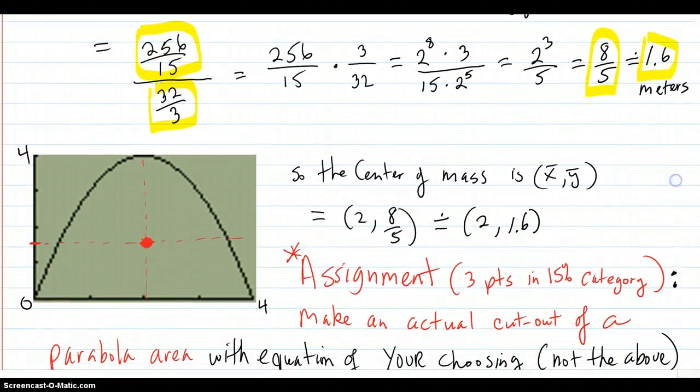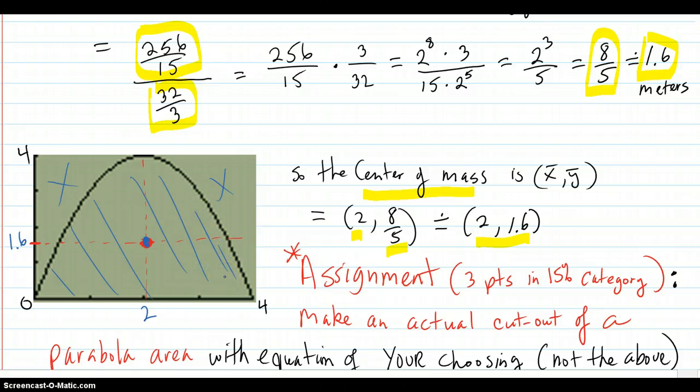So then you go over to here and you say the final center of mass is the x coordinate and the y coordinate, which is about 2 comma 1.6. So you have your 2 and this is about 1.6 right there. So there's your point. And if you cut the rest of this off, you're just talking about this area here to be cut out of cardboard. And if you were to put your finger right there, it would balance on the tip of your finger.